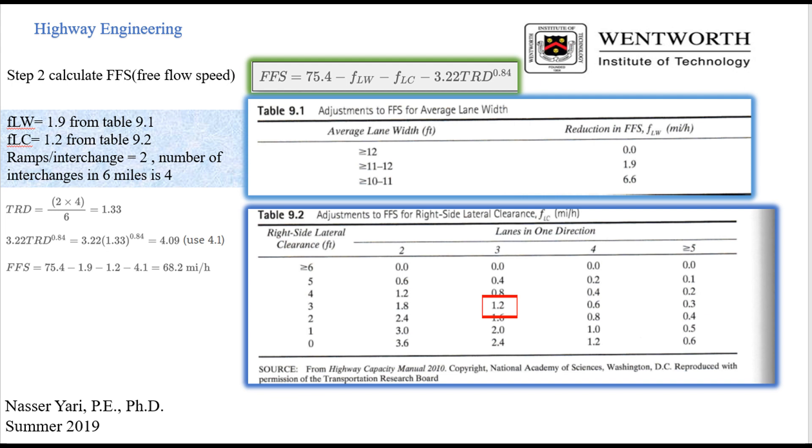And in a second, we're going to go ahead and figure out the FLC. And if you look at FLC, FLC comes out to 1.2, because we have a right side shoulder is three feet, and we match up with three feet, and we have three lanes. So when we match those two up, you end up with 1.2. And the next thing we're going to calculate, we're going to go ahead and calculate the ramp density. And that's going to be two ramps within a six mile, and four interchange and divide that by six. And it comes out 1.33. And therefore, our FFS comes out to 68.2 mile.